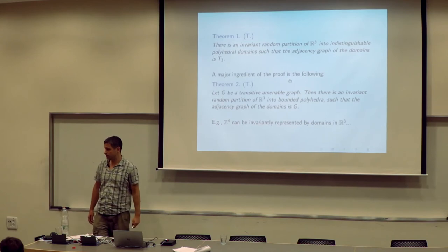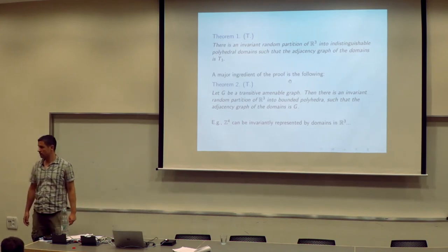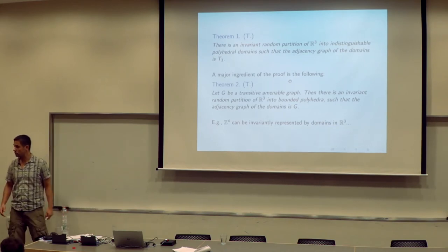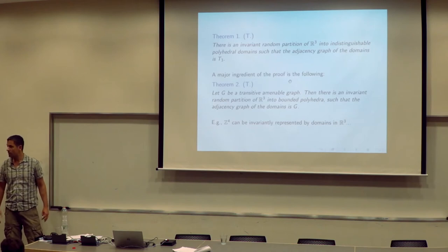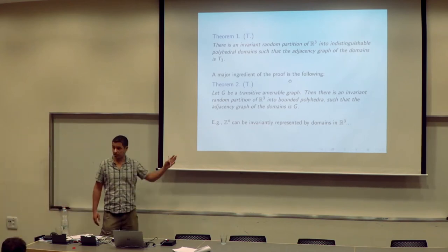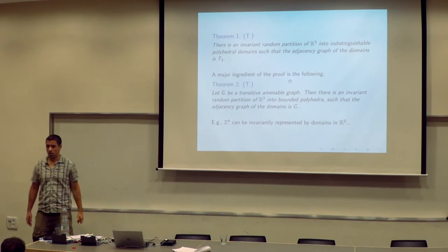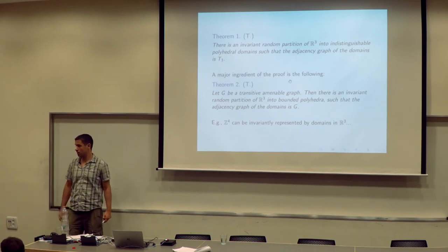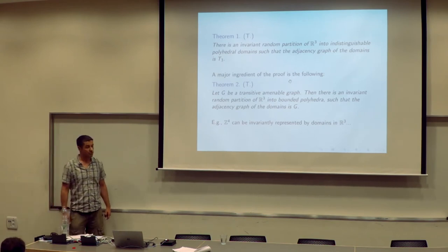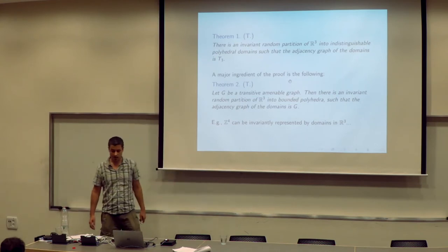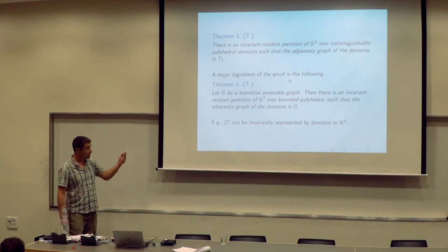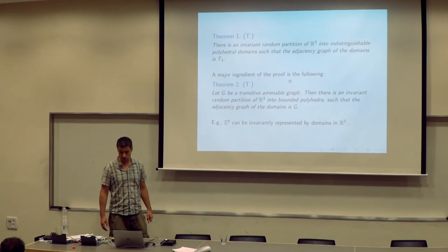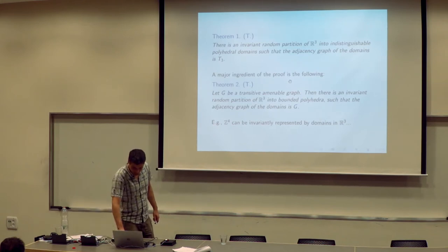With finite-measure tiles, one can show that one cannot represent a non-amenable G. In a way, this theorem characterizes amenability through the existence of such a tiling with tiles of finite measure.